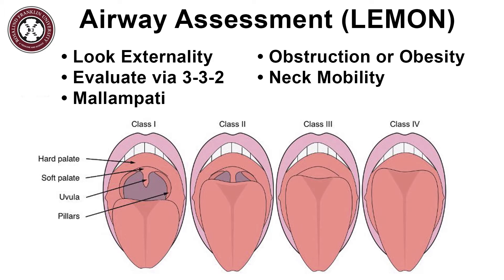LEMON is an acronym for: Look Externally, Evaluate using the 3-3-2 rule, Mallampati scoring, Obesity or Obstruction, and Neck mobility. Other than key information in the patient's chart, looking externally should be the initial assessment completed to notice any overt indicators that intubation might be difficult — for instance, poor dentition or morbid obesity.